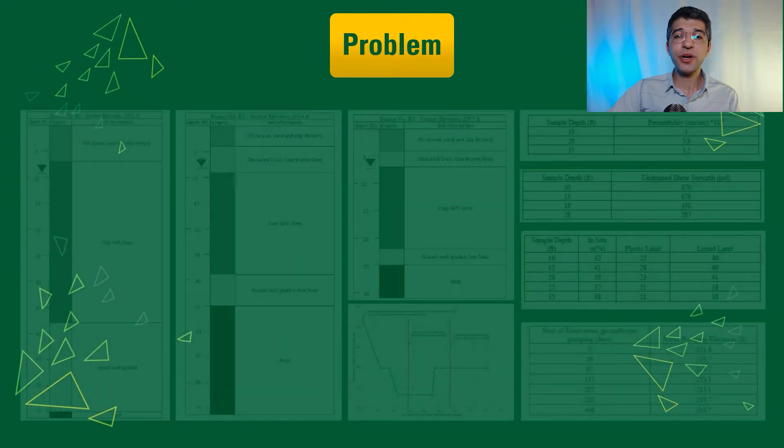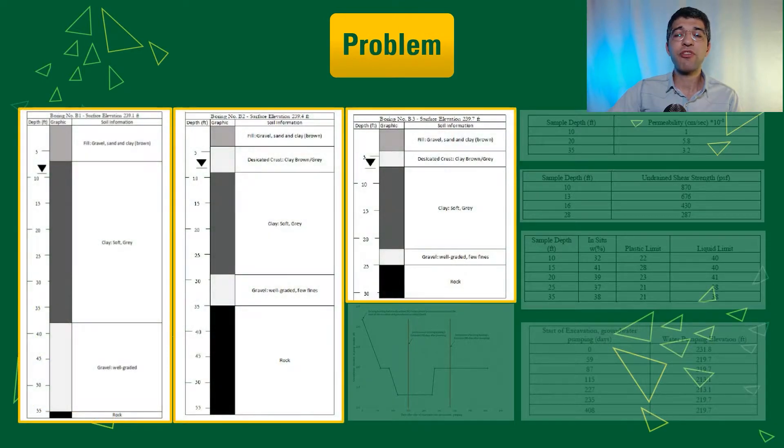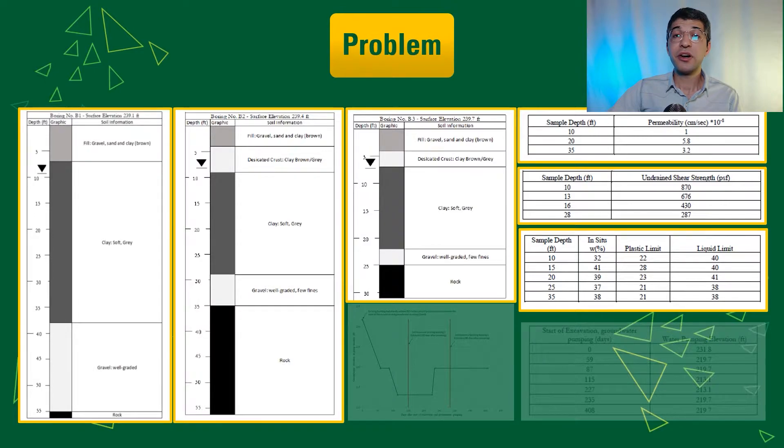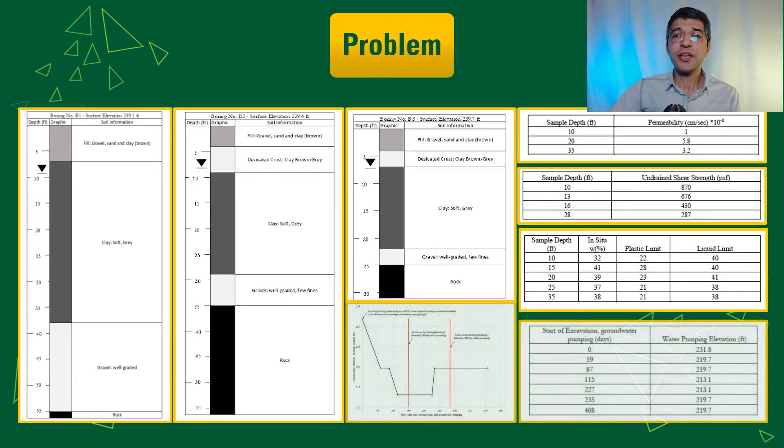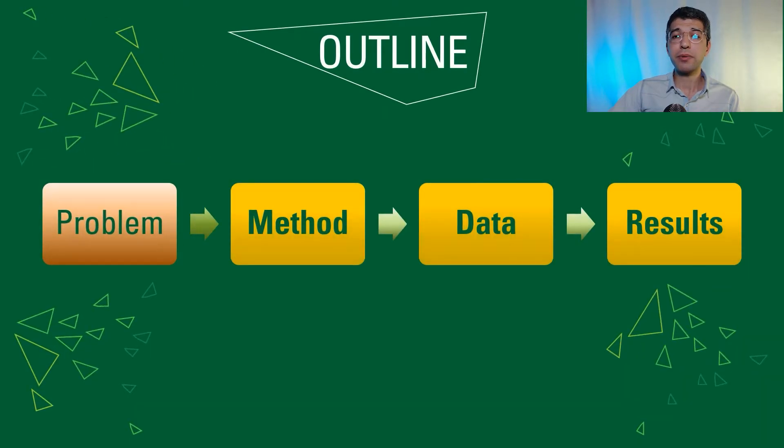And also, in order to solve this problem, we are given some information. Information about soil profile at borehole number 1, borehole number 2, and borehole number 3, and also soil properties at borehole number 1. In addition, we are given some information about dewatering rate at different days. So let's find out how we can solve this problem.